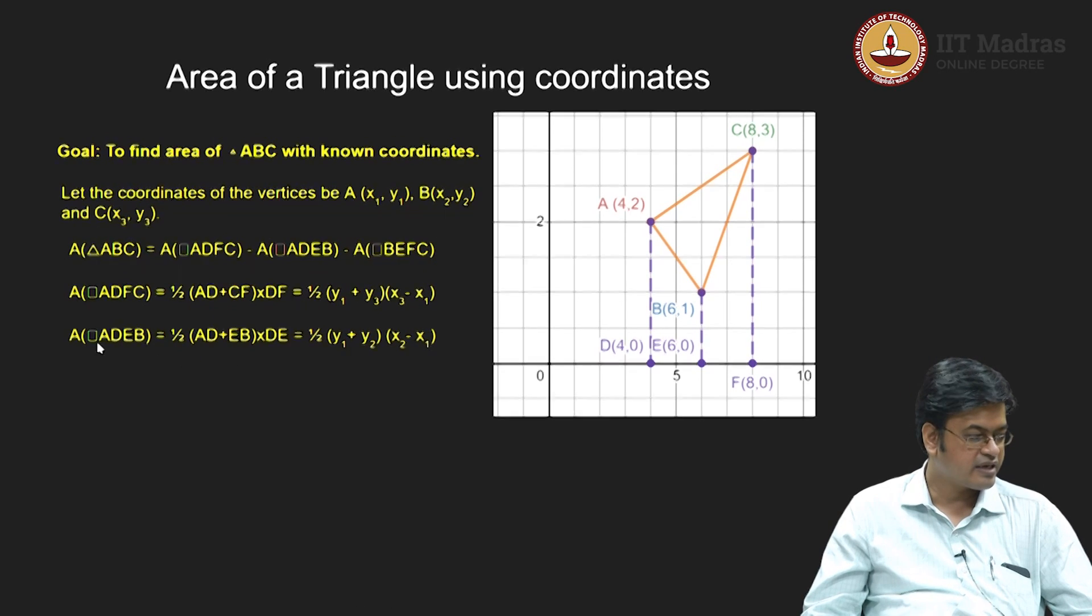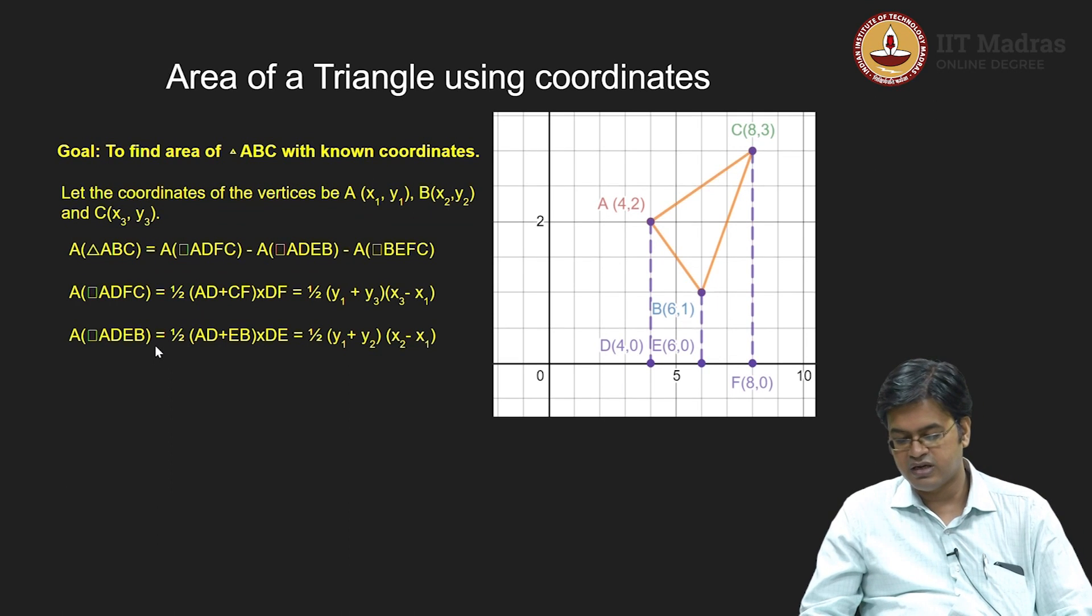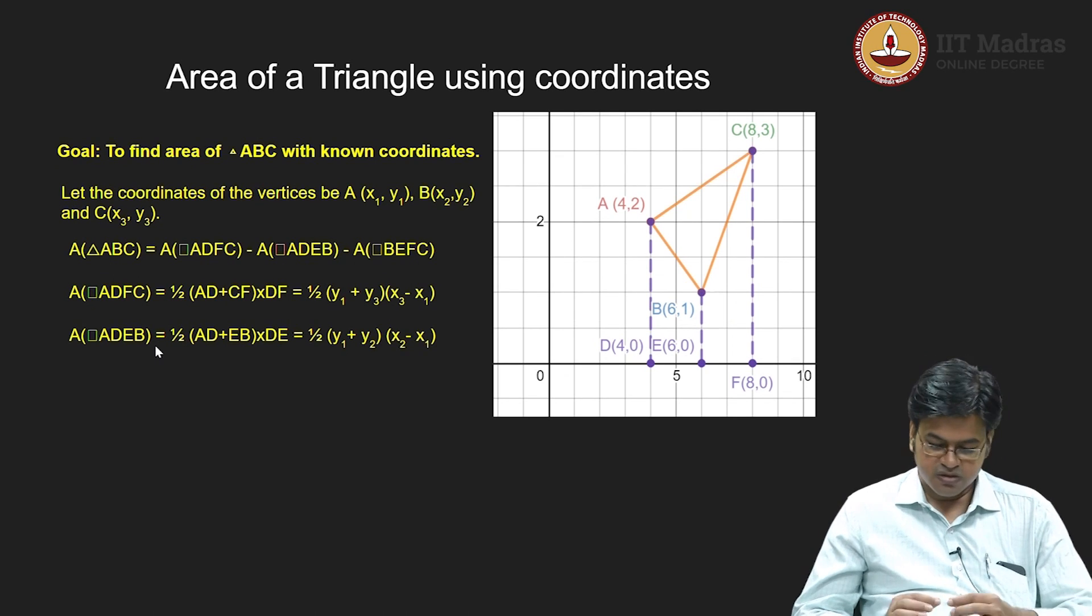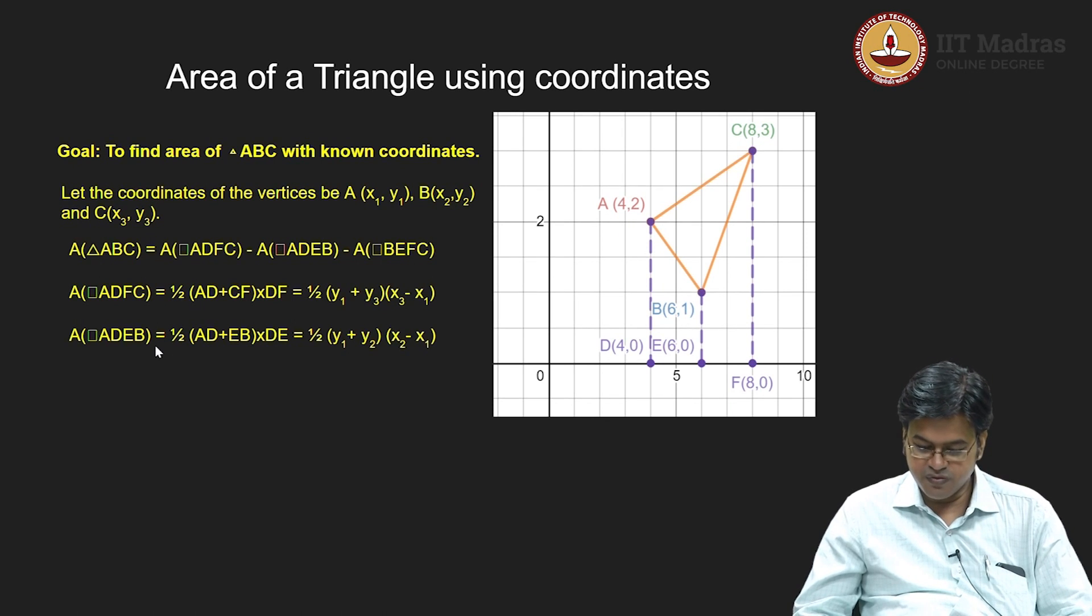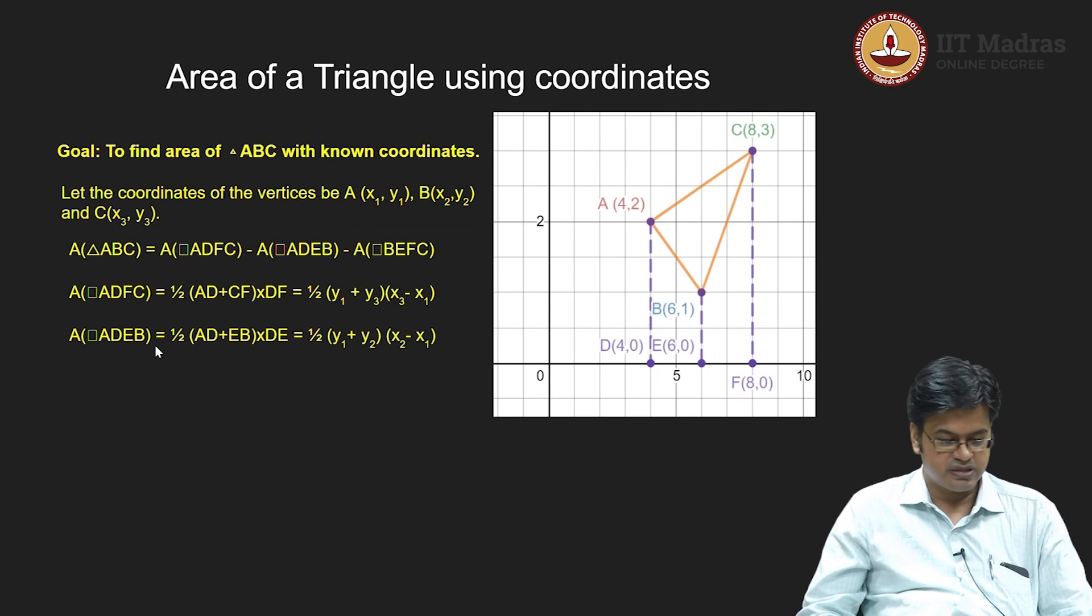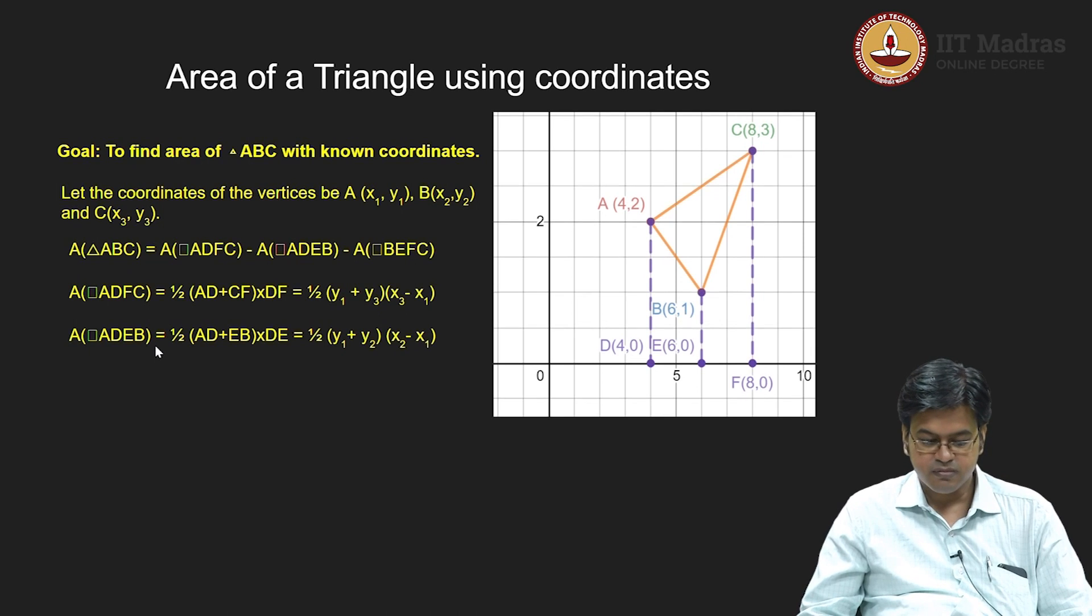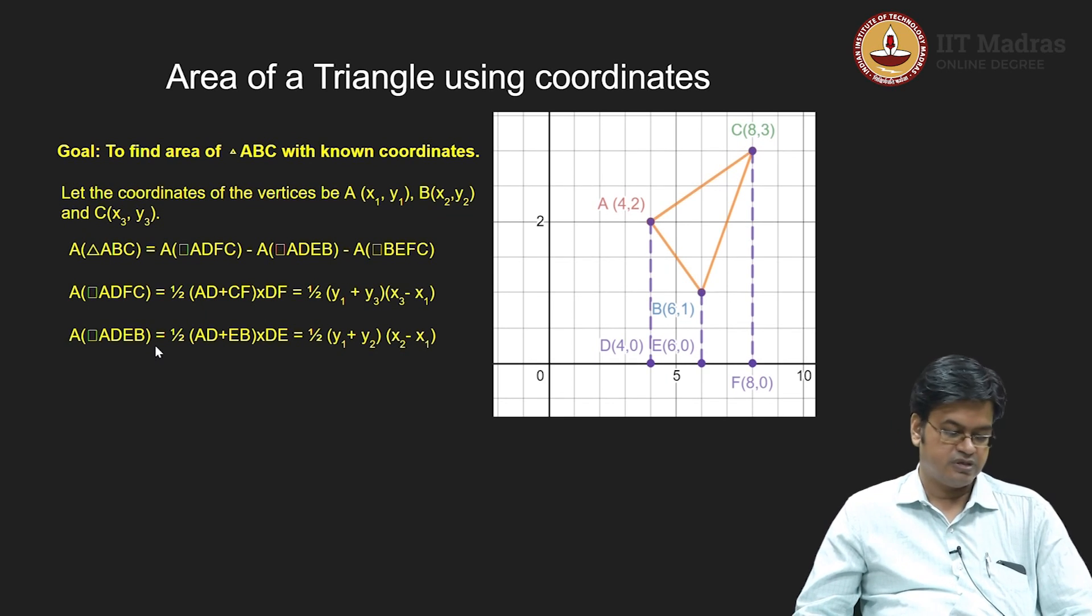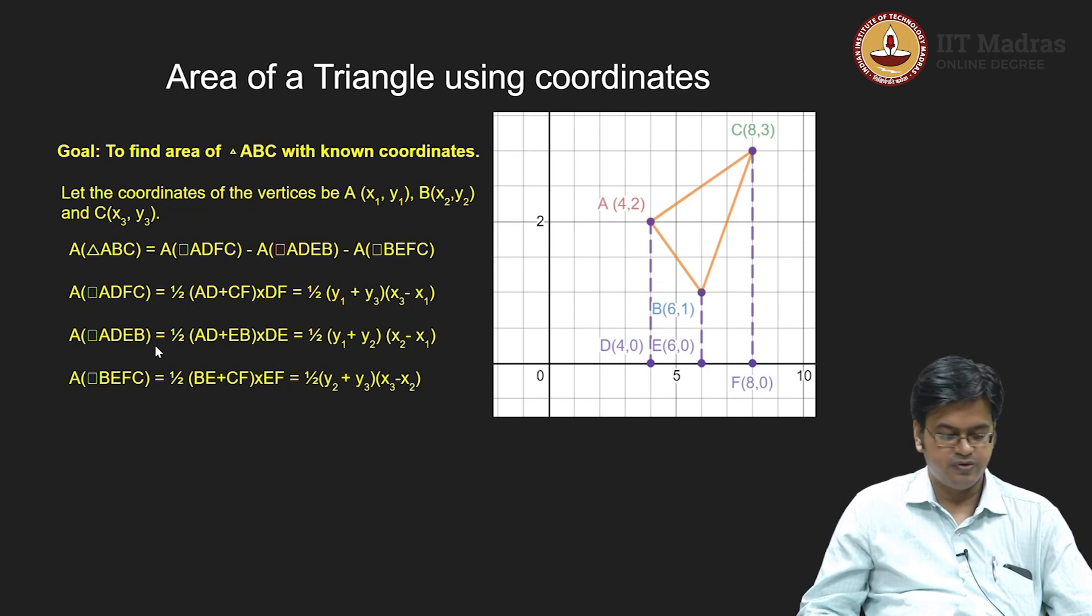In a similar manner, I can actually see the smaller quadrilateral that is ADEB, and the height of that quadrilateral will be the length of ED, which is 2 in this case or x2 minus x1 in the coordinate system. This is what our understanding of the length is. In a similar manner, the parallel sides are y1 and y2. Lengths of parallel sides is y1 plus y2. So I have this. In a similar manner, you can compute BEFC.